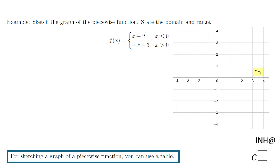First of all, let's see what a piecewise function is. In this case we have a function with two pieces: the first piece is x minus 2 when x is less than or equal to 0, and the second piece is negative x minus 3 when x is greater than 0. This is a piecewise function with two pieces, each acting based on its own algebraic equation.